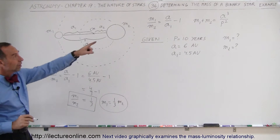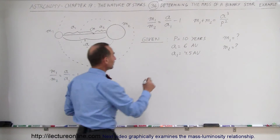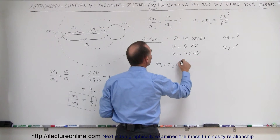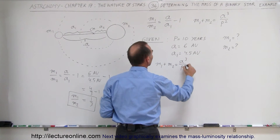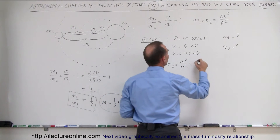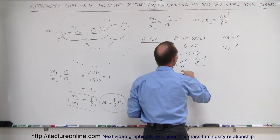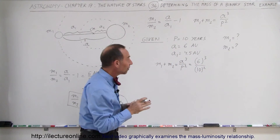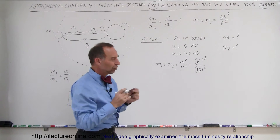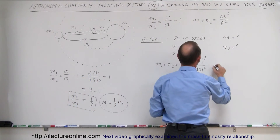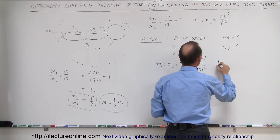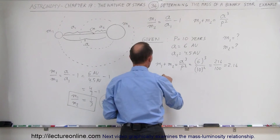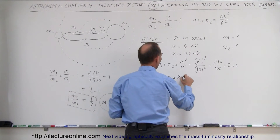Now we use the second equation. M1 plus M2 equals the distance between them cubed divided by the period squared — the distance being 6 astronomical units cubed, divided by the period of 10 squared. The units work out to solar masses. This gives 216 divided by 100, which is 2.16. So M1 plus M2 equals 2.16 solar masses.